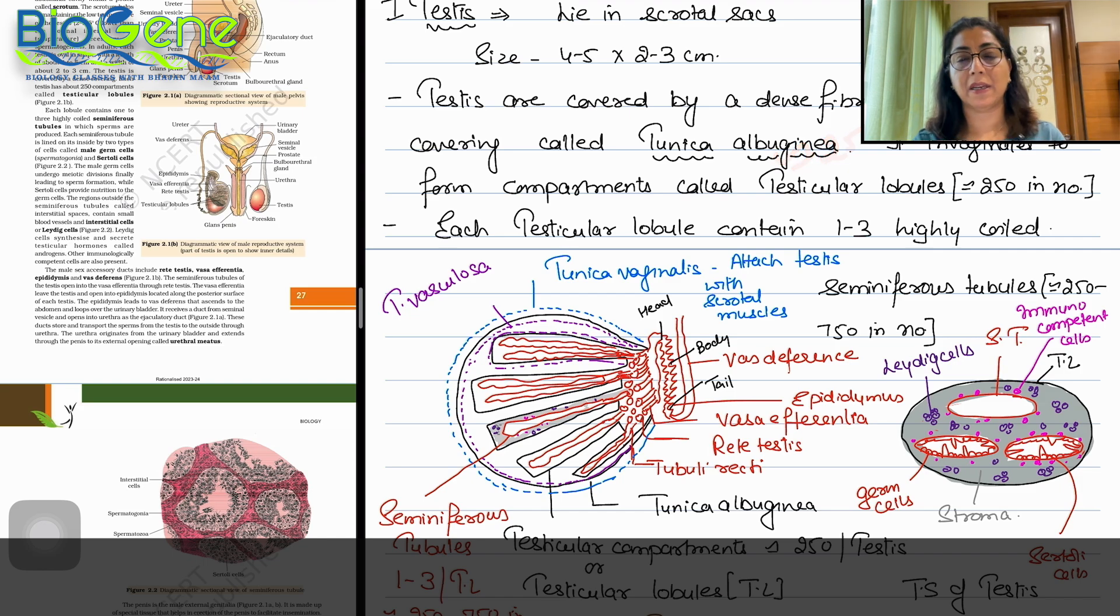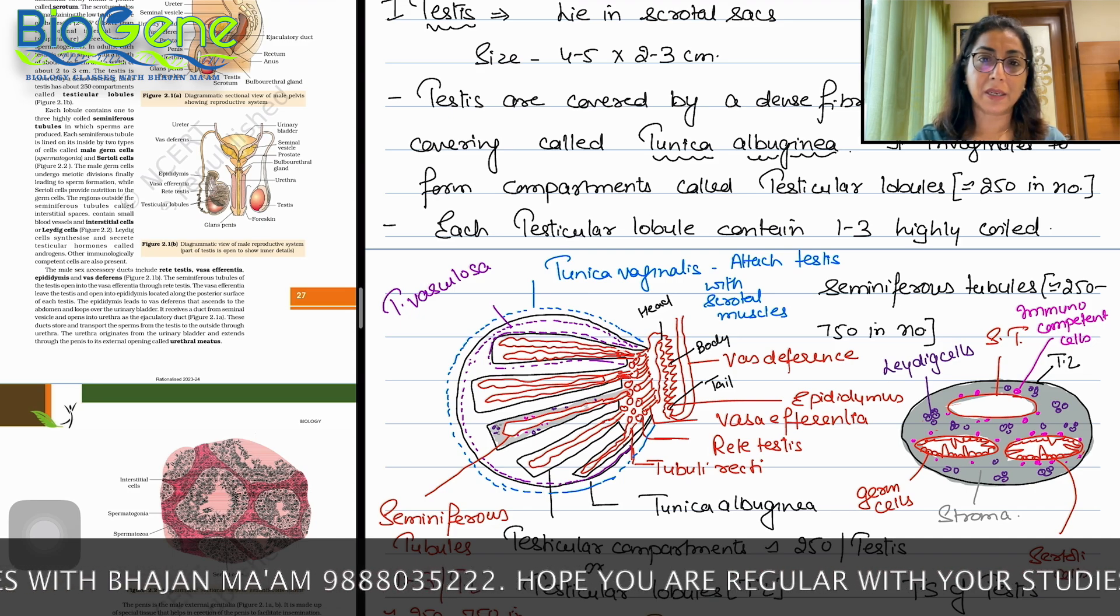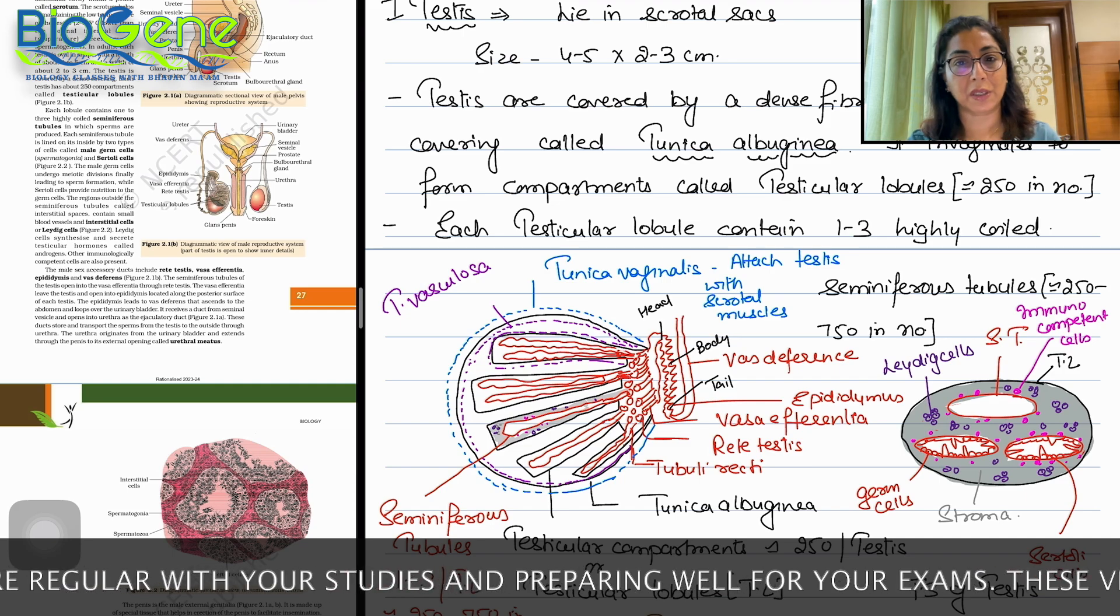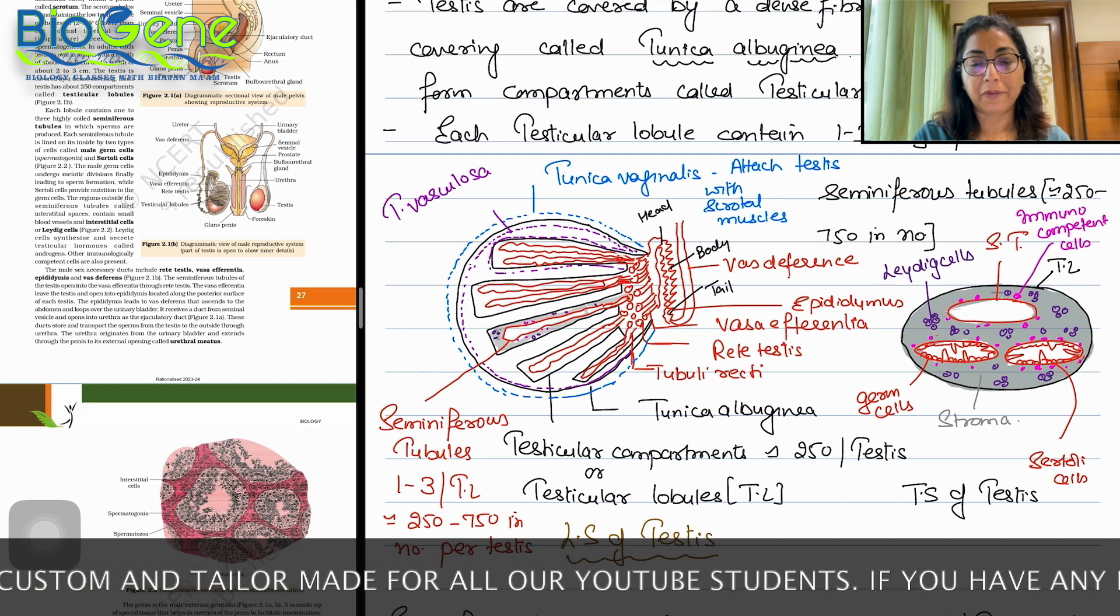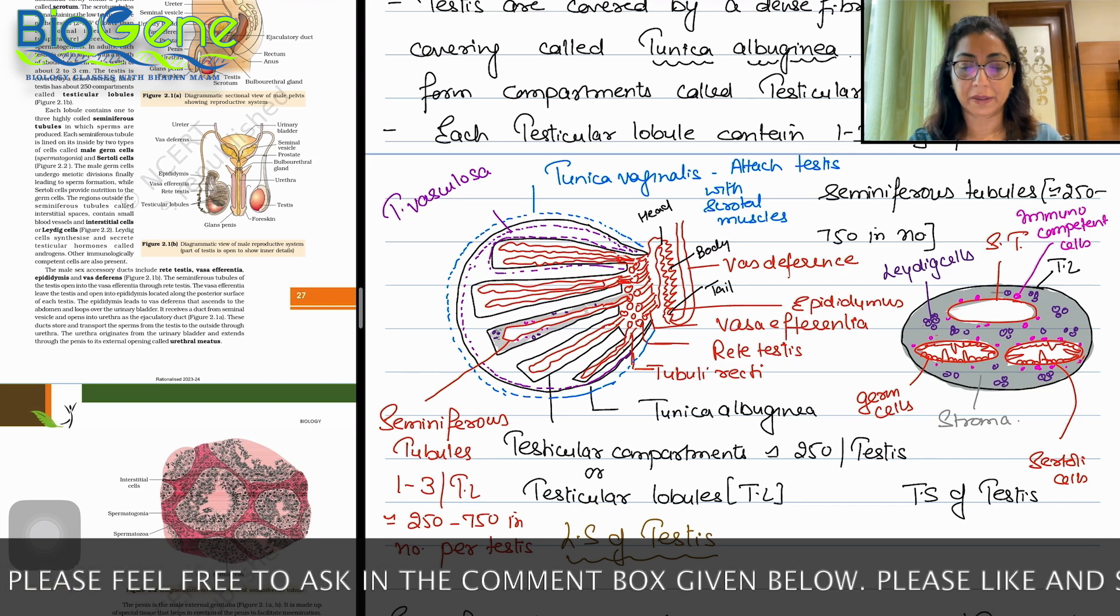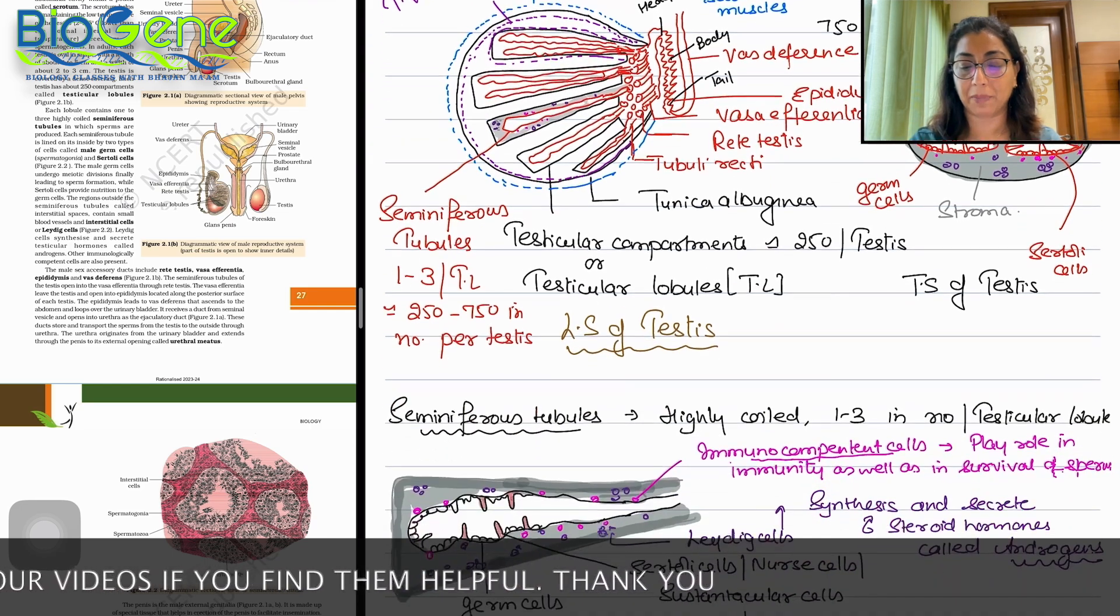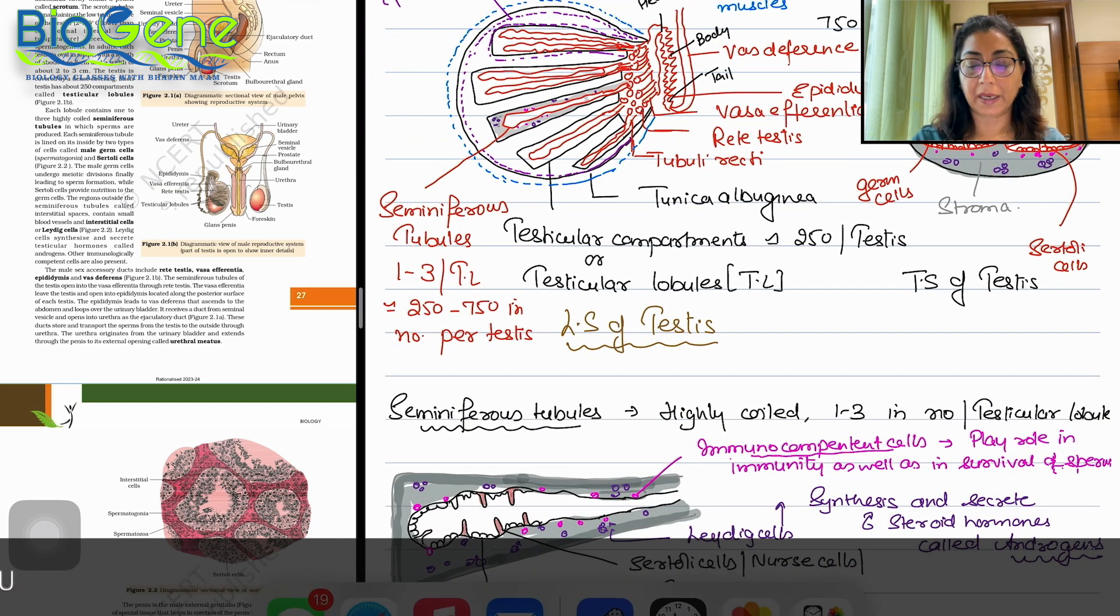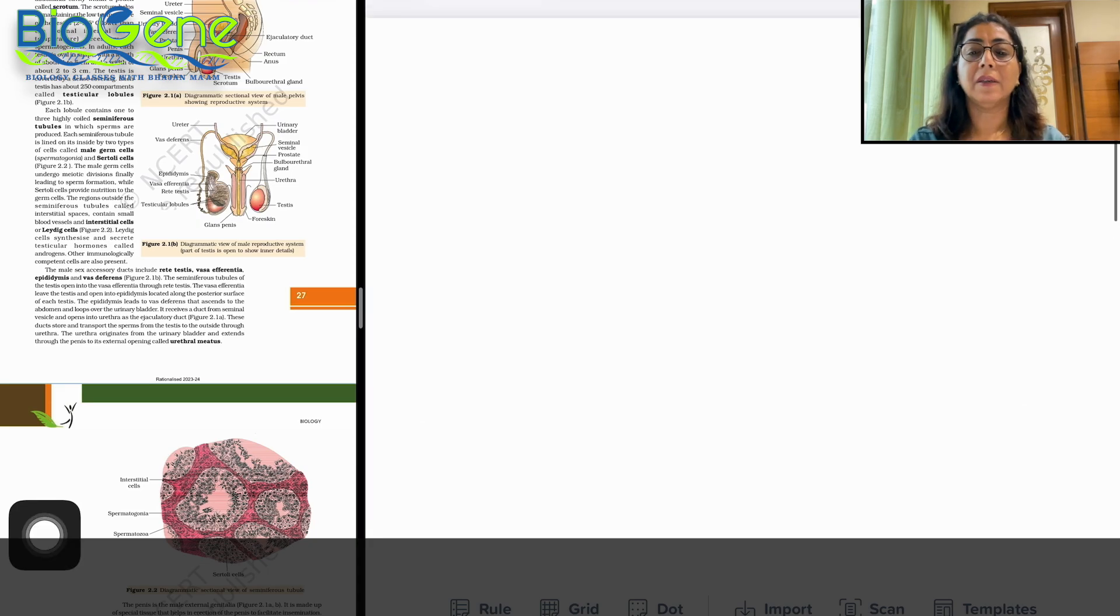In each compartment there are approximately 1 to 3 highly coiled structures we call seminiferous tubules. NCERT asks about covering testicular lobules, so if we talk about seminiferous tubules, there are 250 to 750 in number per testis. If we talk about covering, I will try to make a little detail. Let me open it one more time so I can have the little explanation with a diagram.